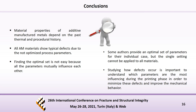Material properties of AM parts strongly depend on the past thermal and procedural history. All AM materials show typical defects that inevitably arise due to non-optimized process parameters. However, finding the optimal set is not easy because all the parameters mutually influence each other, and the degree of effect of each parameter is not well understood. Several authors have found interesting results providing an optimal set of parameters for individual cases, but a single setting cannot be applied to all materials and in all conditions. Studying how defects occur during the printing phase is important to understand which parameters are most influential in order to find the optimal set, so that defects are minimized and mechanical behavior is improved.